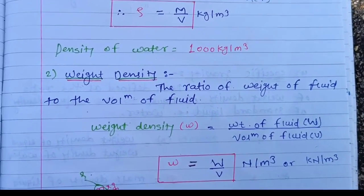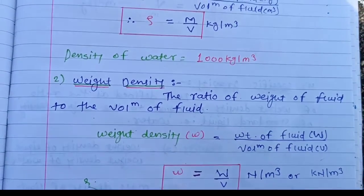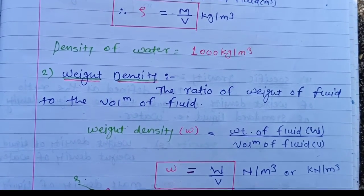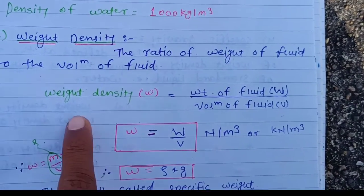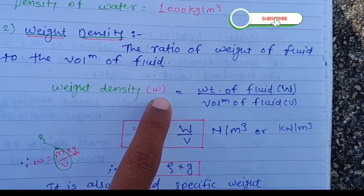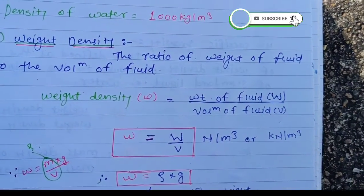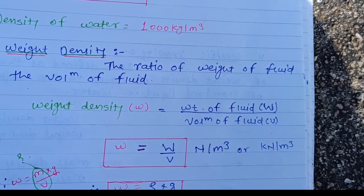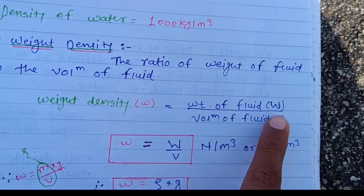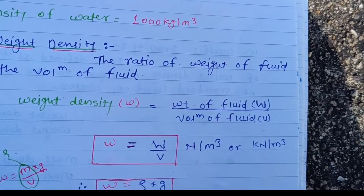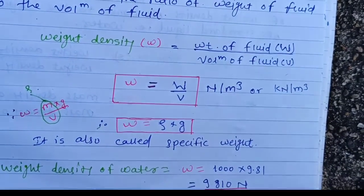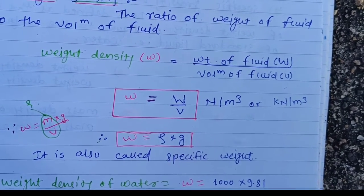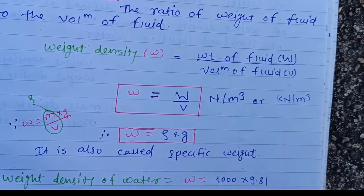Weight density is the ratio of weight of fluid divided by the volume of fluid. It is denoted by small w. The formula is w equals W divided by V, where W is the weight of fluid and V is the volume of fluid. The unit is Newton per meter cube or kilonewton per meter cube.